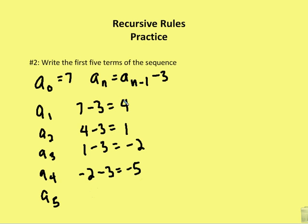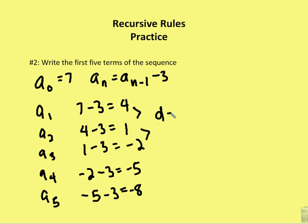And finally, a sub 5 is equal to a sub 4, which is negative 5, minus 3, and that is equal to negative 8. So you can see that we have an arithmetic sequence, because I am decreasing each value by 3. My constant difference is going to be negative 3.